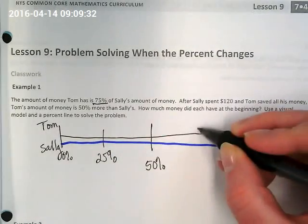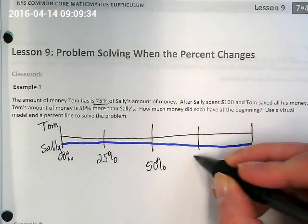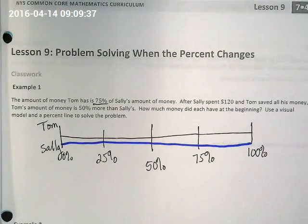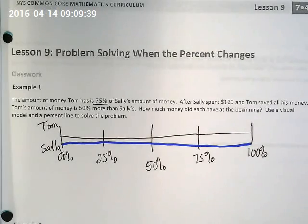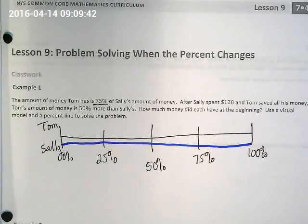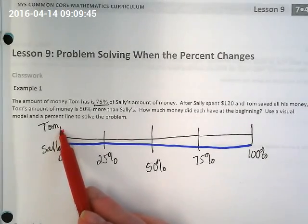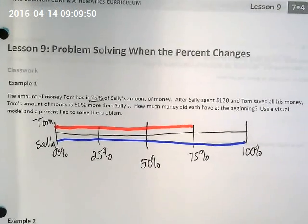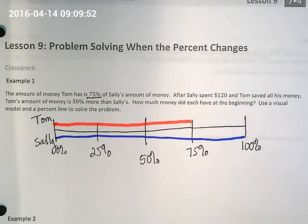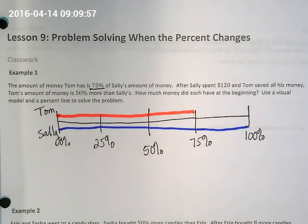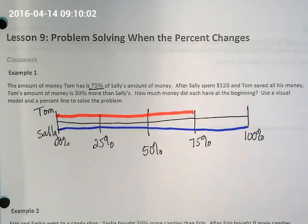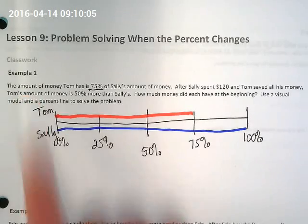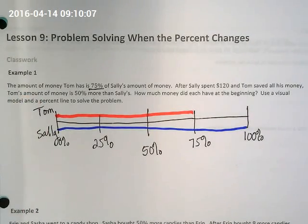How far up are we going to color for Tom? He's going to go to 75%. Right there — we've just done a visual of the first sentence of this problem: the amount of money Tom has is 75% of Sally's money.